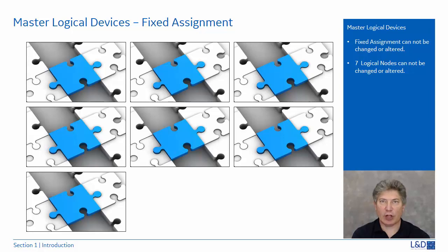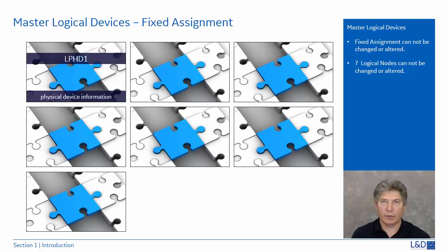Next, let's focus on the master logical device. The master logical device has seven logical nodes associated with it that are a fixed assignment and cannot be altered. The first is LPHD1, which is the physical device info node. It contains information such as the vendor, software revision, serial number, model number, relay name, physical location such as latitude, longitude, and altitude, and any errors.